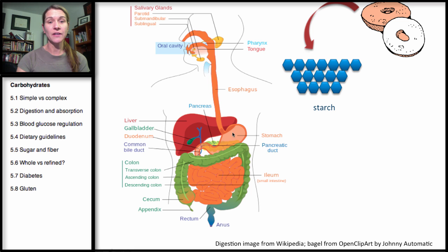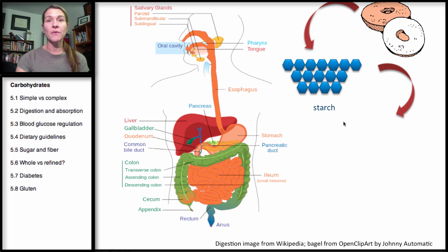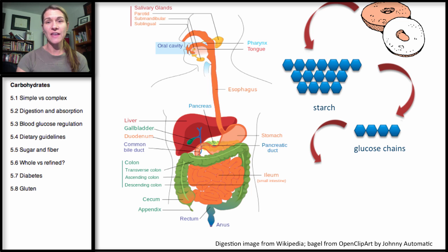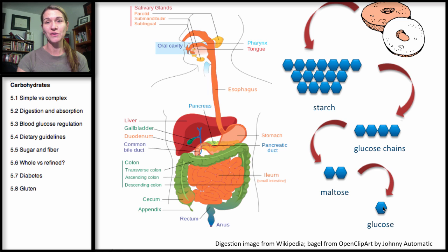Once it becomes that paste, it goes down the esophagus to the stomach. There's really little to no carbohydrate digestion happening in the stomach — the main digestion happens within the intestines. Within the intestines, the starch is broken down into shorter glucose chains, then into maltose, which is a disaccharide. From maltose, it's broken down further into glucose, our single sugar unit.